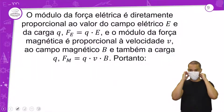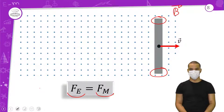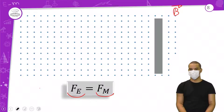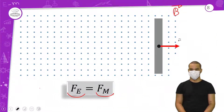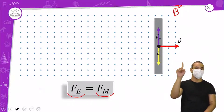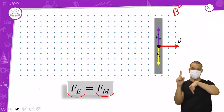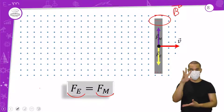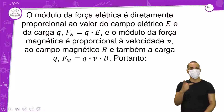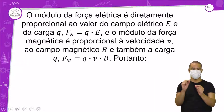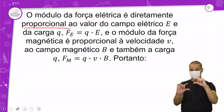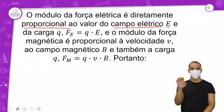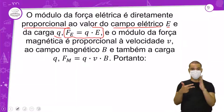Por que estou falando isso? Porque vou substituir o valor da força elétrica e o valor da força magnética para calcular algumas coisas. Isso está equilibrado. O módulo da força elétrica é diretamente proporcional ao valor do campo elétrico E e da carga Q: força elétrica é Q vezes E. O módulo da força magnética é proporcional à velocidade V, ao campo magnético B, e também à carga Q: força magnética é Q vezes V vezes B.